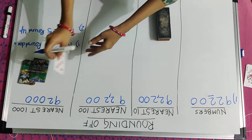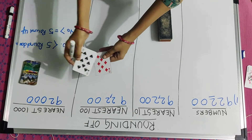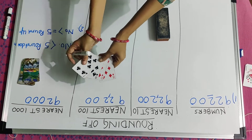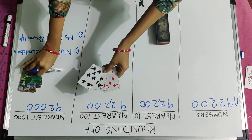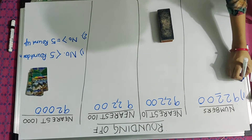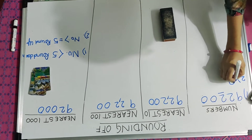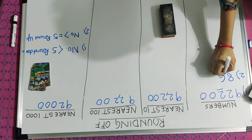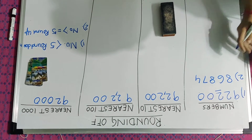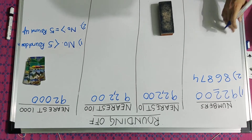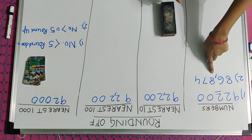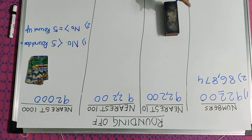Now I will again pick some more cards. I have cards 8, 6, 8, 7, 4. I can say it as 86,874.